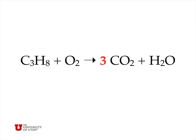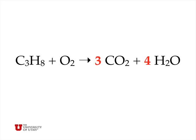Now we go to hydrogen, and we see that there are eight hydrogen atoms on the left-hand side and only two on the right-hand side. So we have to introduce a stoichiometric coefficient of 4 in front of the water, and now the hydrogen is balanced on both sides.